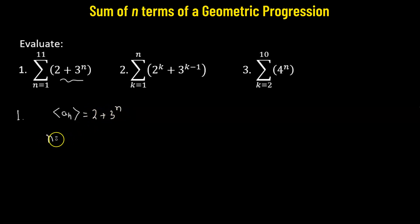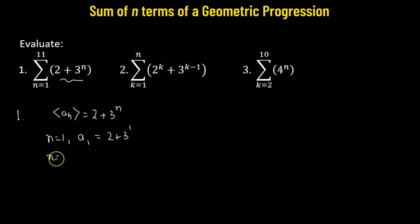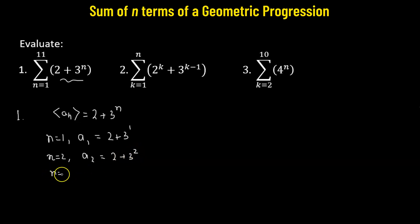For n equals 1, we obtain the first term a1 given by 2 plus 3 raised to the power of 1. For n equals 2, the second term a2 will be 2 plus 3 squared. Similarly, for n equals 3, we get the third term 2 plus 3 raised to the power of 3.